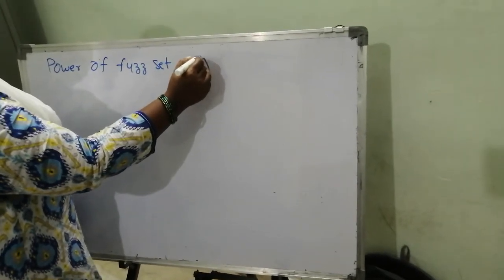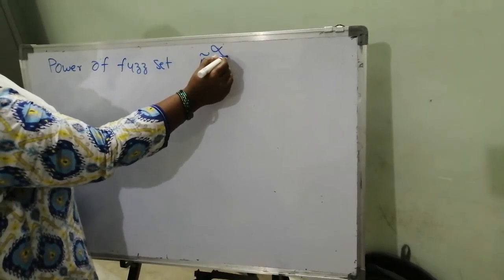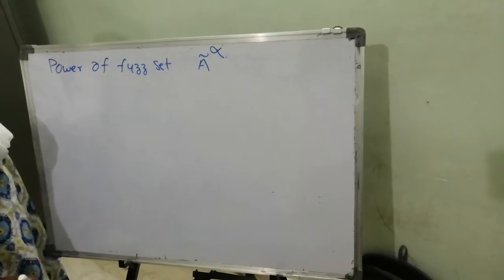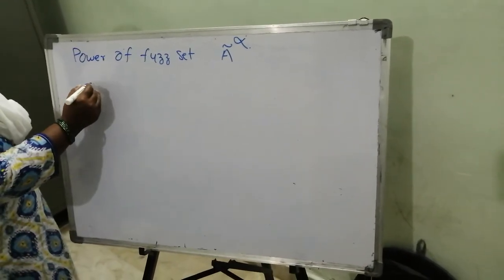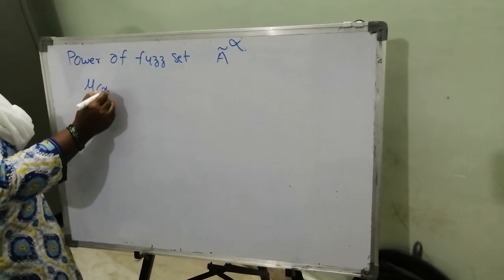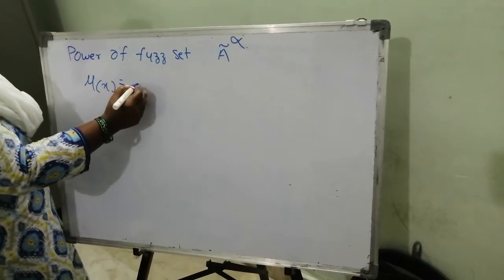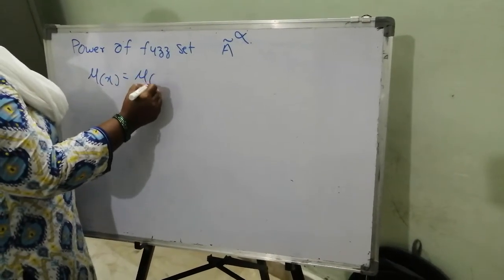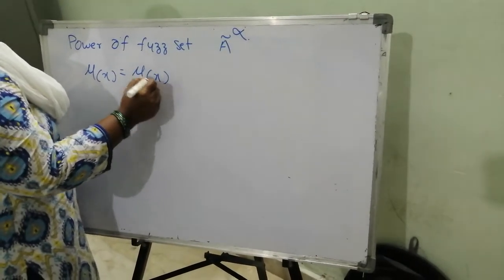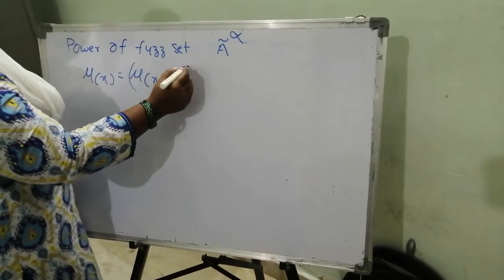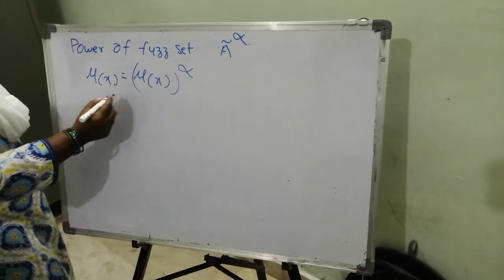It is denoted by A to the power of alpha. Its membership function is defined as membership value of x whole to the power of alpha. So for example,